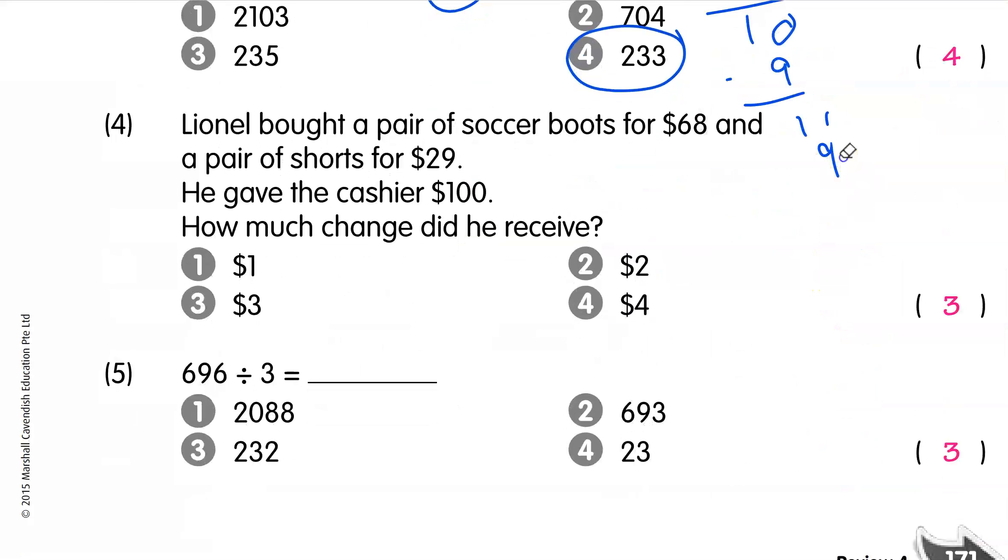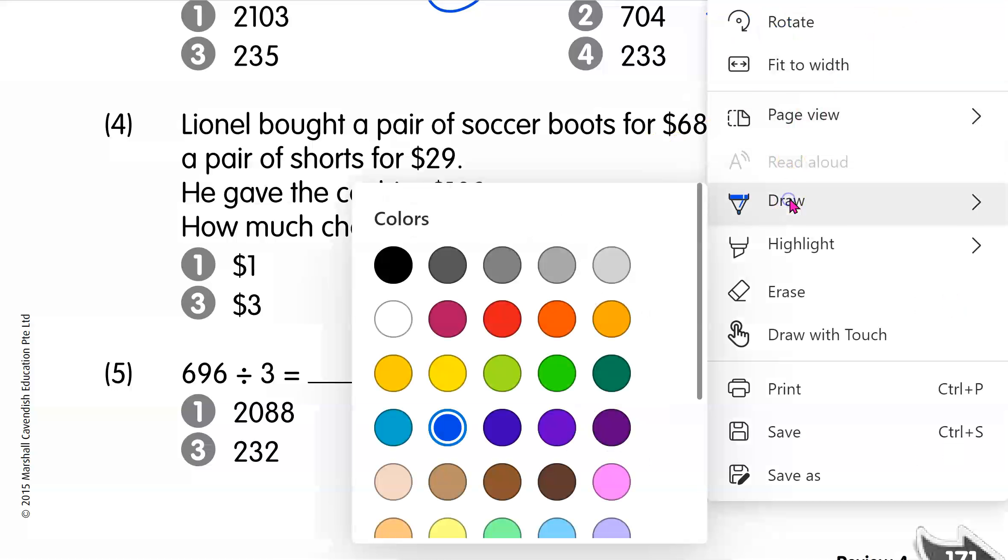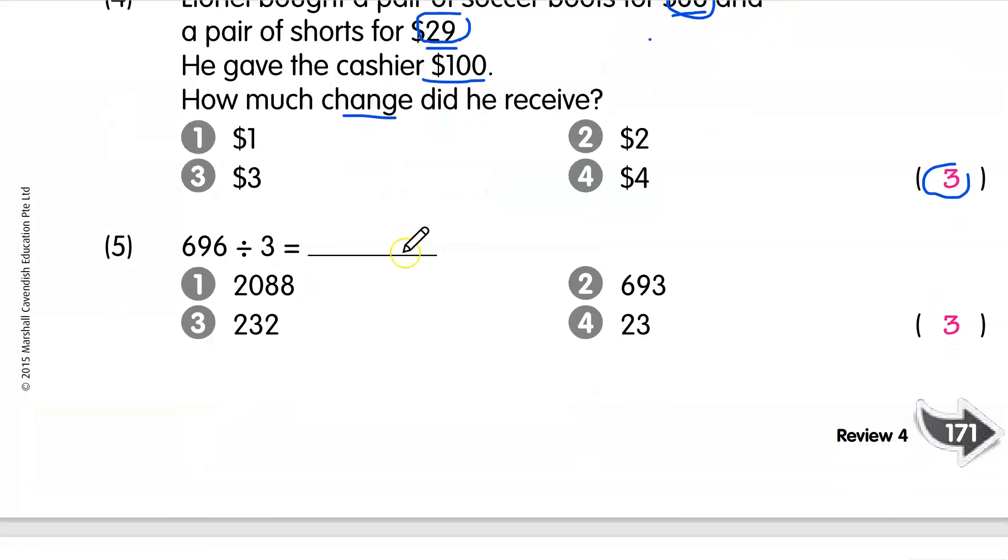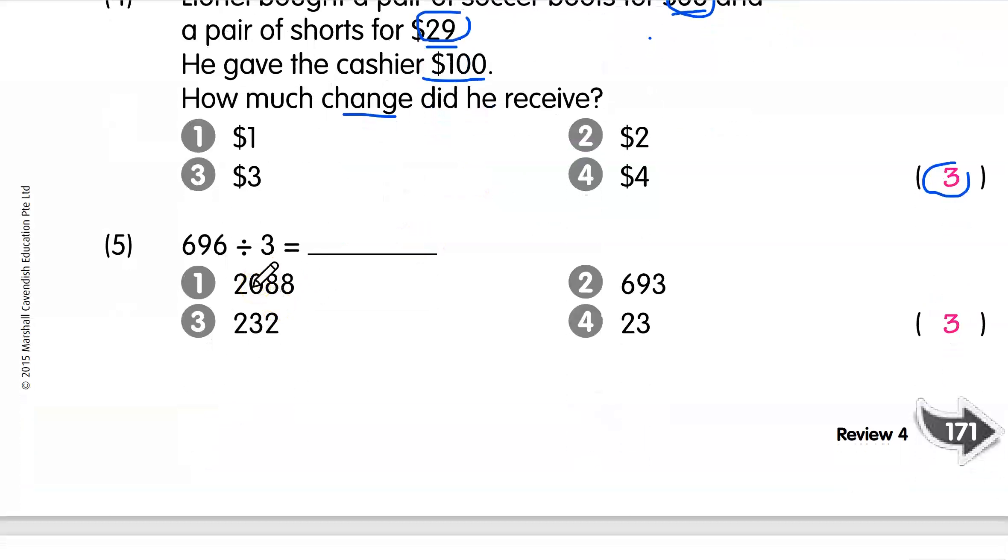Lionel bought a pair of soccer boots for $68 and a pair of shorts for $29. He gave the cashier $100. All you have to do is add 68 and 29 together, find the change. 68 plus 29 is $97, 100 minus 97 is $3.